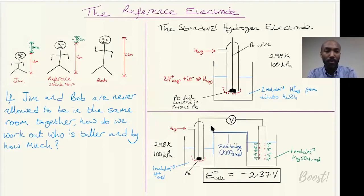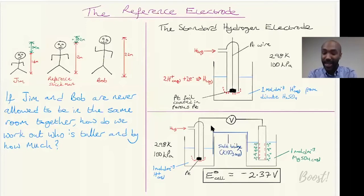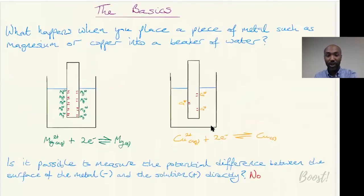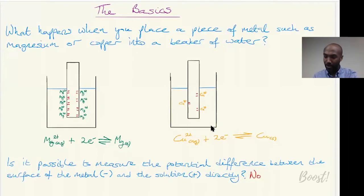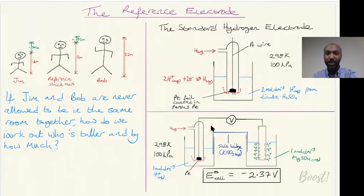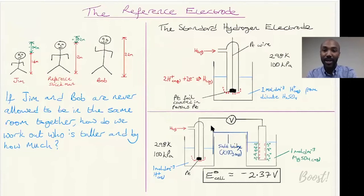So Bob is taller than Jim by 0.6 meters - 60 centimeters - and we've worked this out without having the two of them in the same room. We just used a reference person. That same idea applies when measuring the potential difference between our magnesium and copper electrodes: we need a reference electrode whose potential is arbitrarily set and against which all other electrodes are measured.